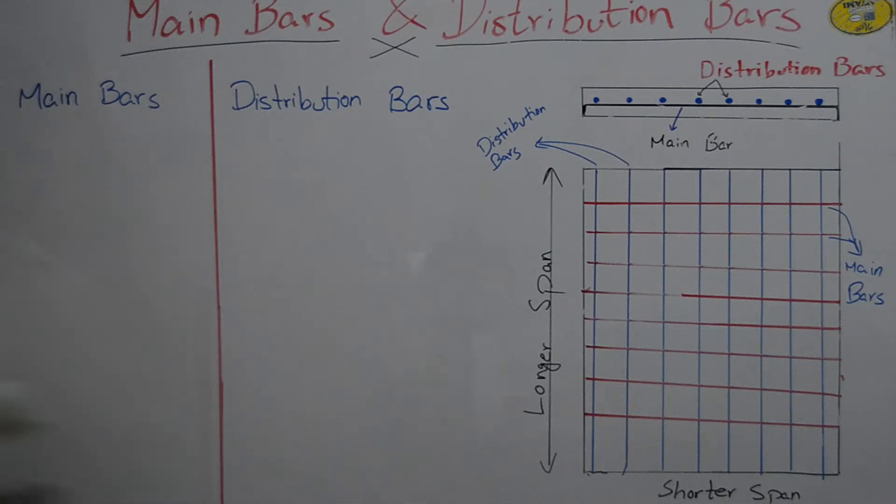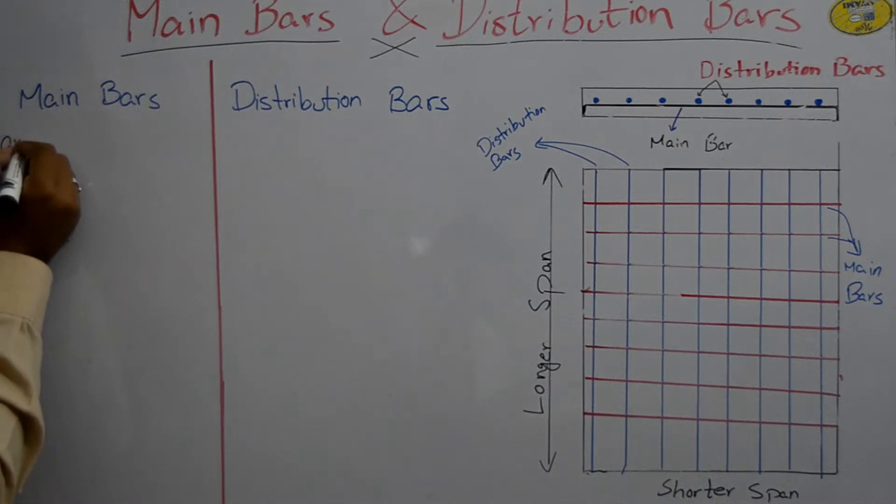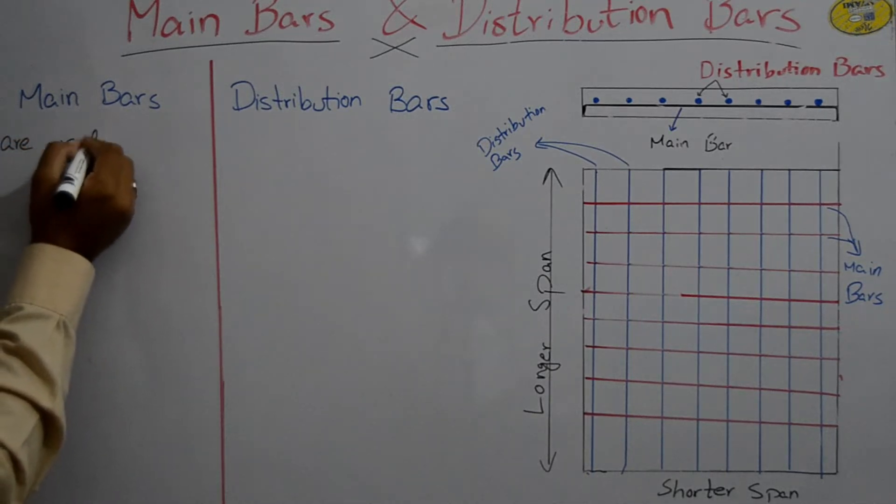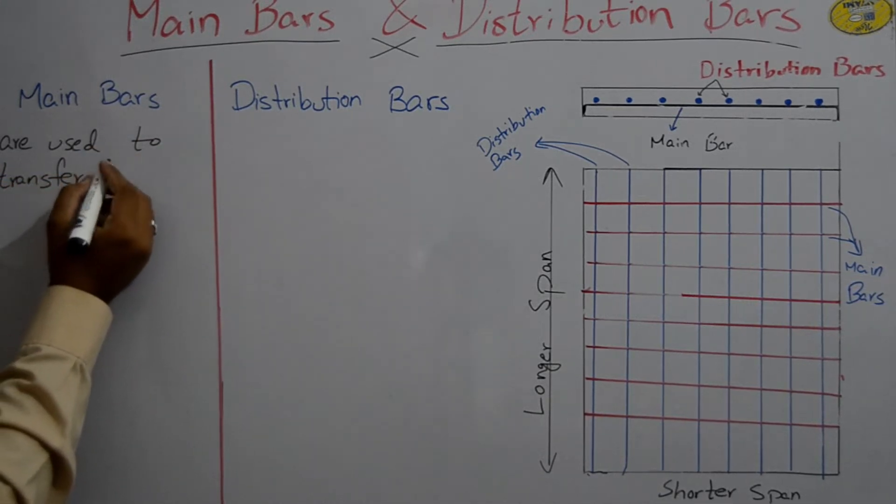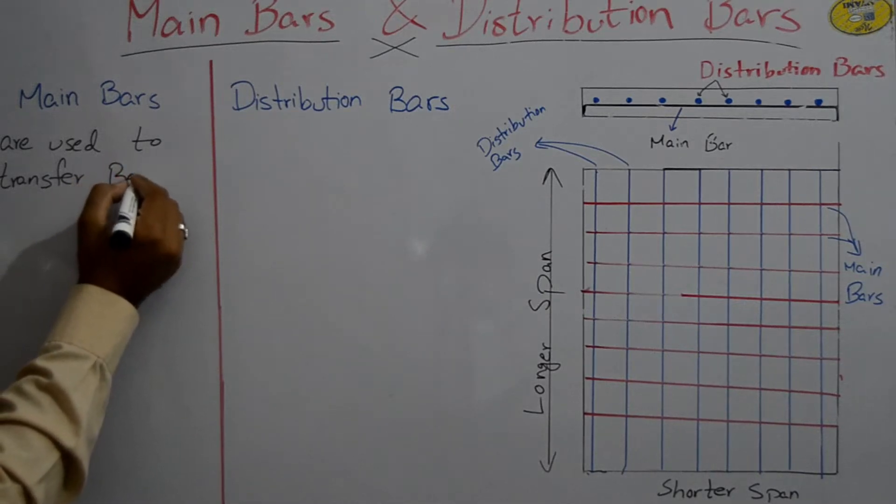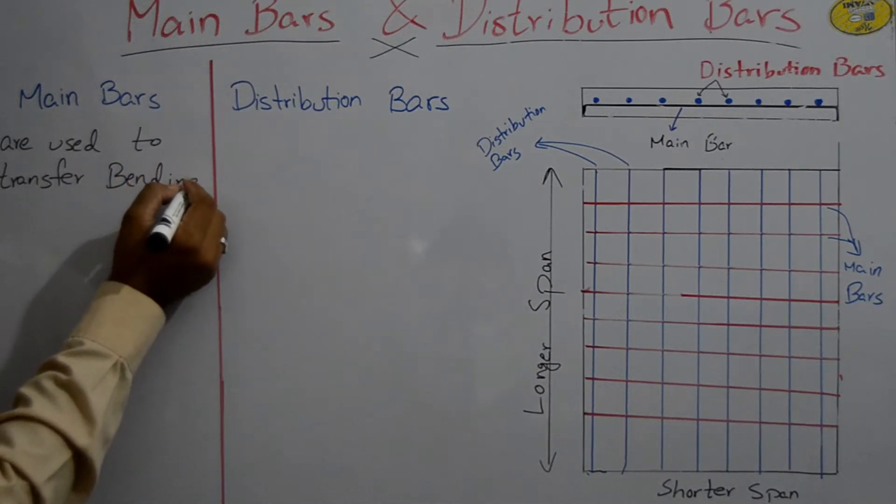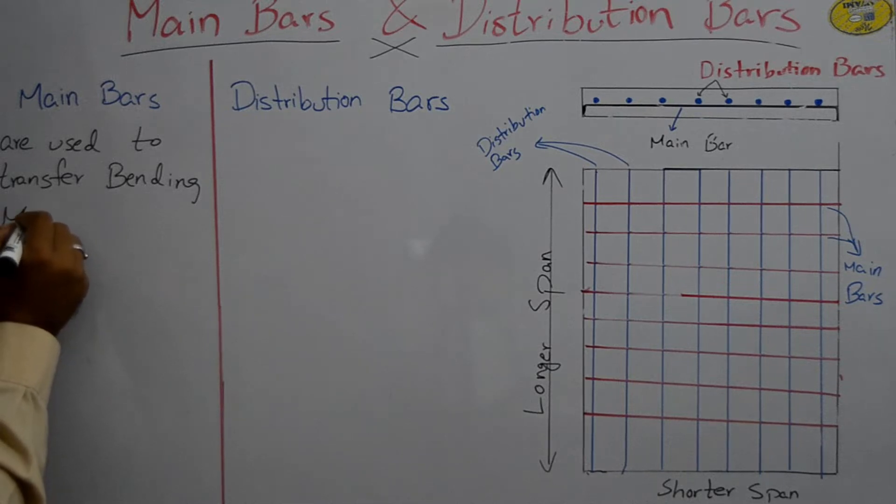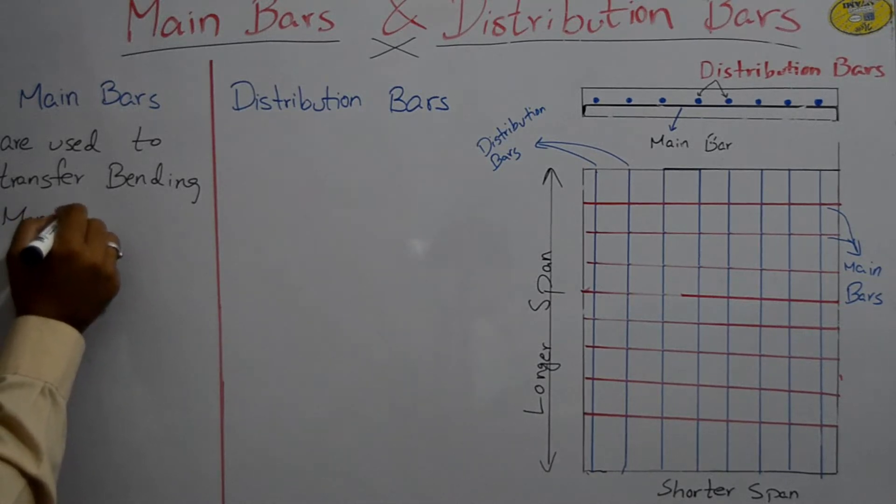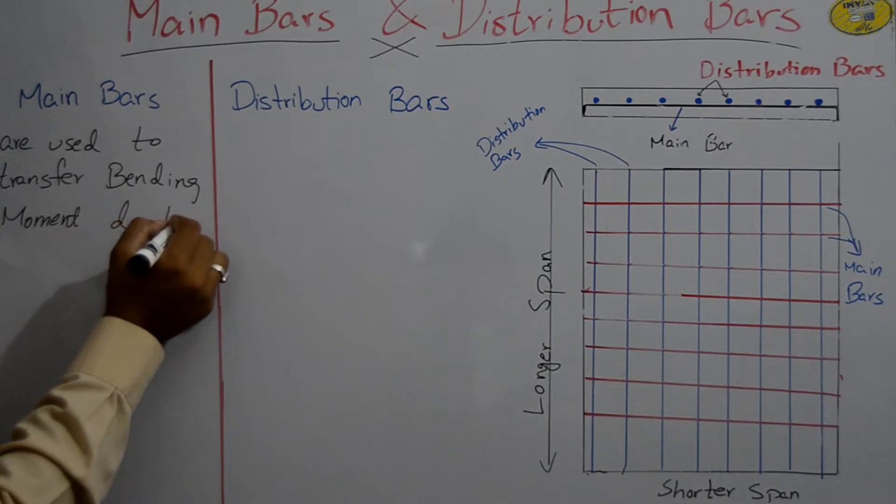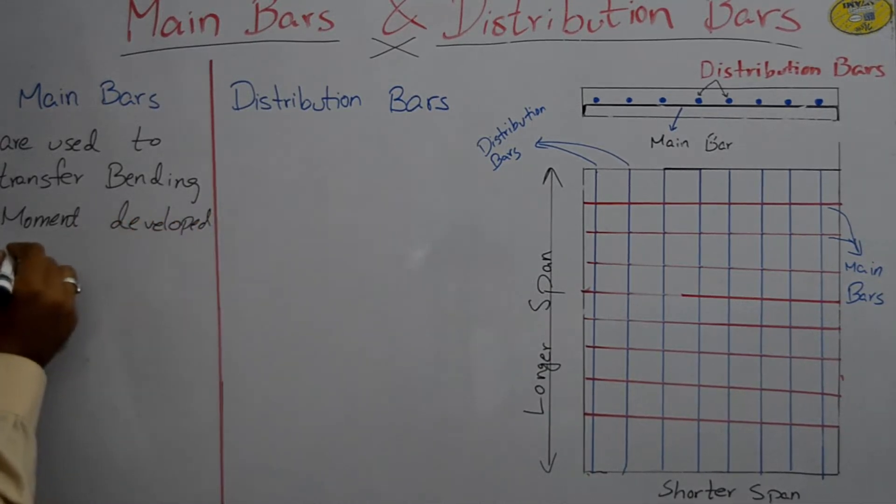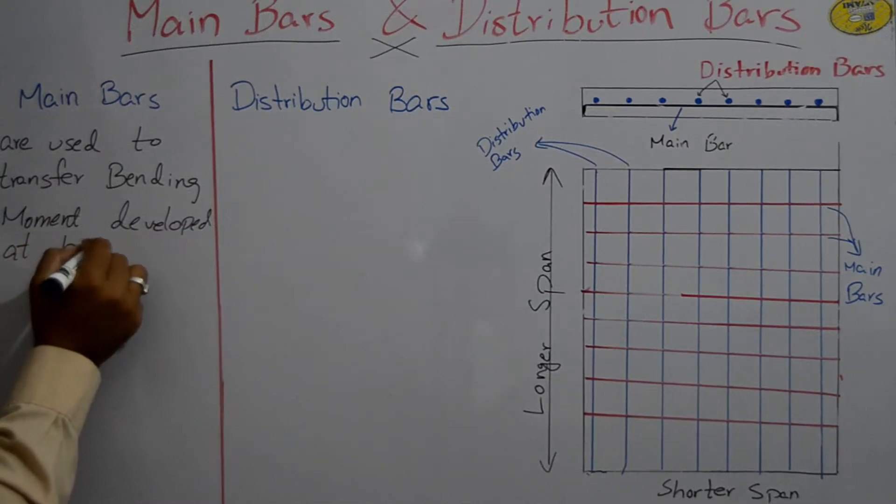So generally, main bars are used to transfer bending moment developed at bottom.